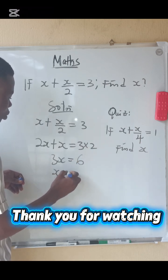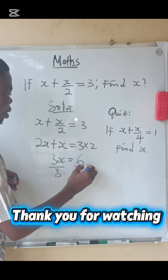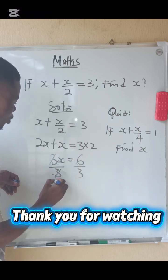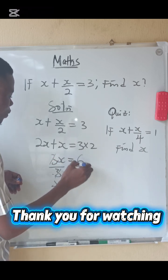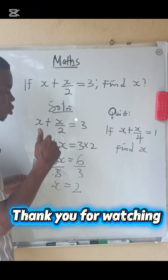So x equals to... that is, divide by 3. So x equals to 6 divided by 3, that is 2. So the answer is 2.